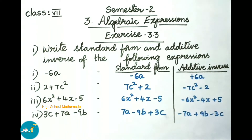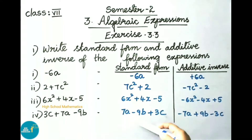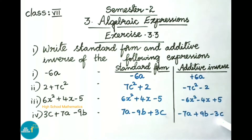See now the fourth one: 3c square plus 7a minus 9b. In this expression all exponents are one only, so we have to arrange the variables in alphabetical order. Standard form is 7a minus 9b plus 3c. The additive inverse is minus 7a plus 9b minus 3c.